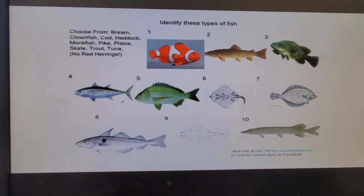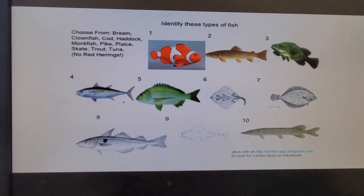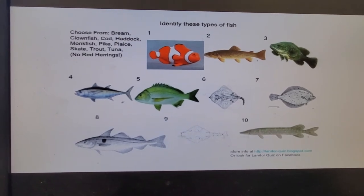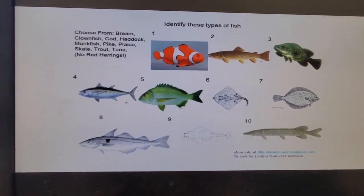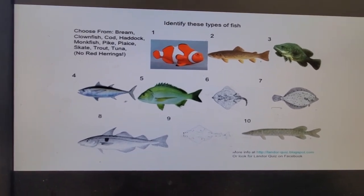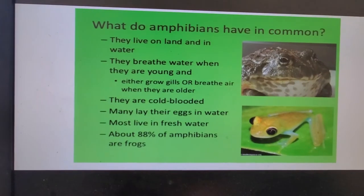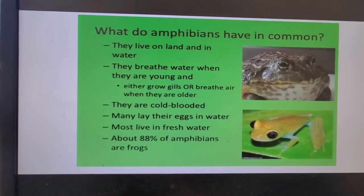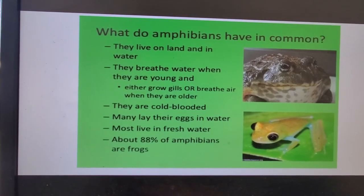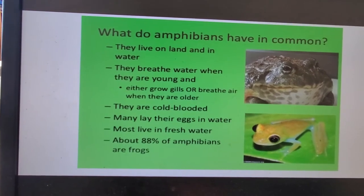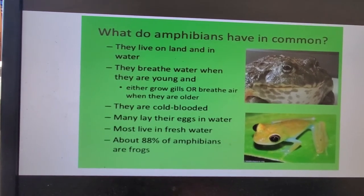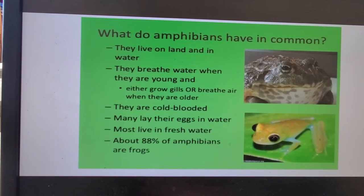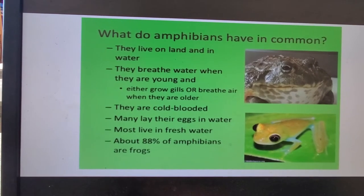With bony fish, you'll notice when you eat them you'll come across small tiny bones if you don't debone them first. So those are your three types of fish groups. The second group we're going to talk about are amphibians. Amphibians can live on land or in water — they have developed the ability to breathe both in water and on land because they also have gills.